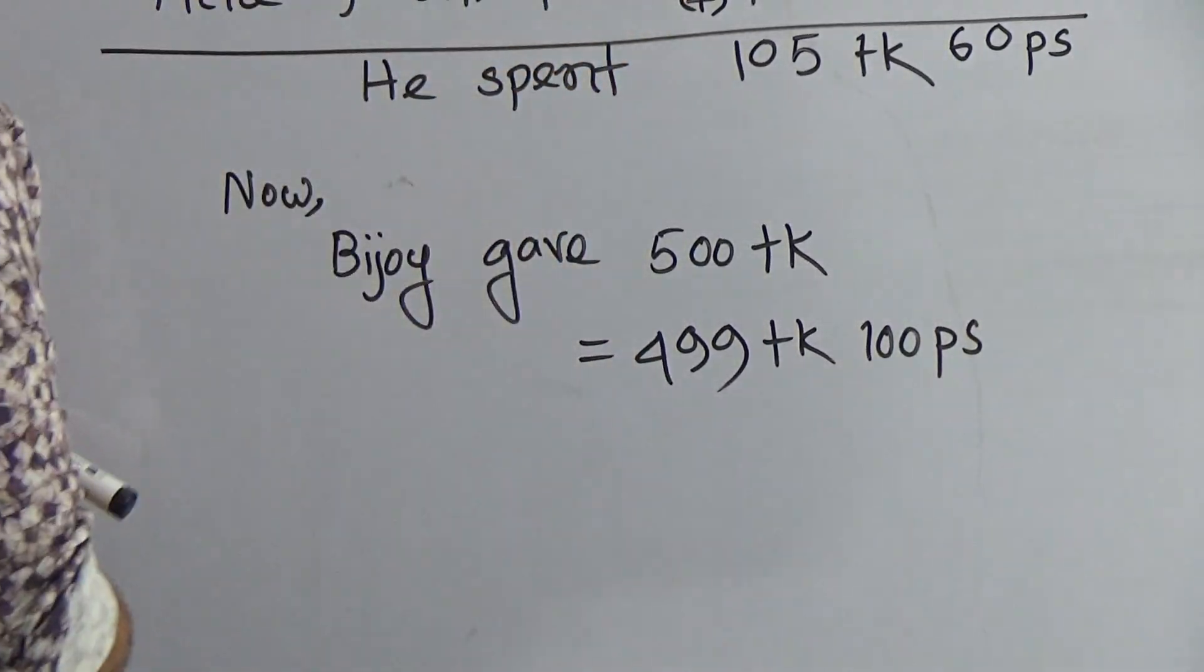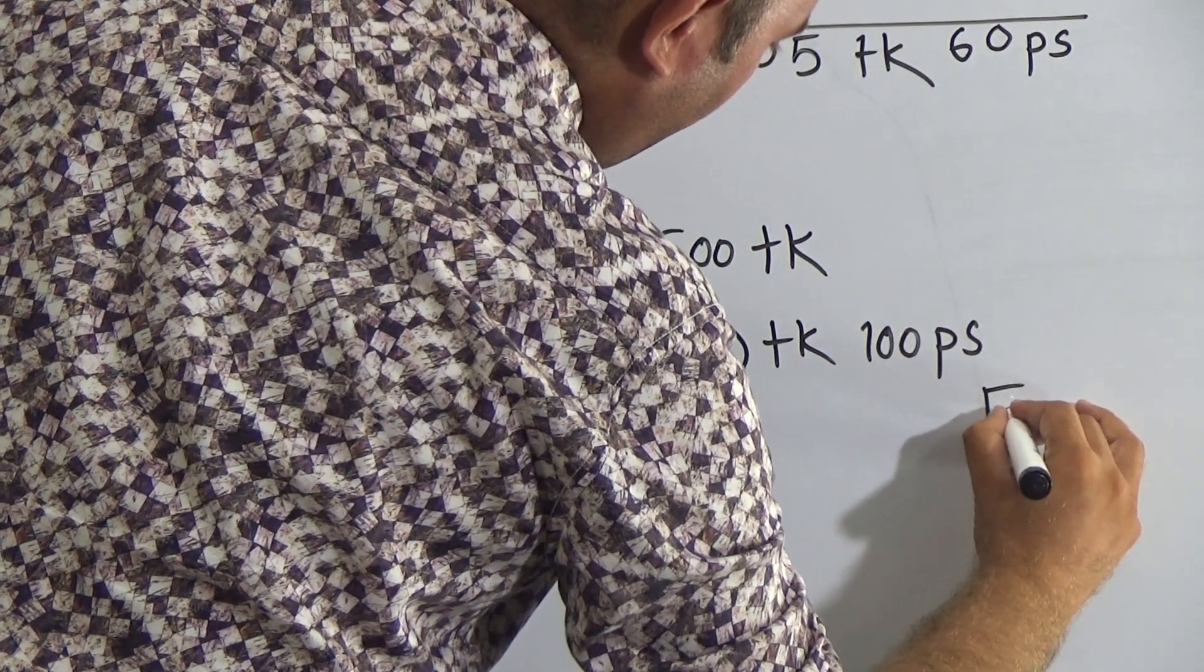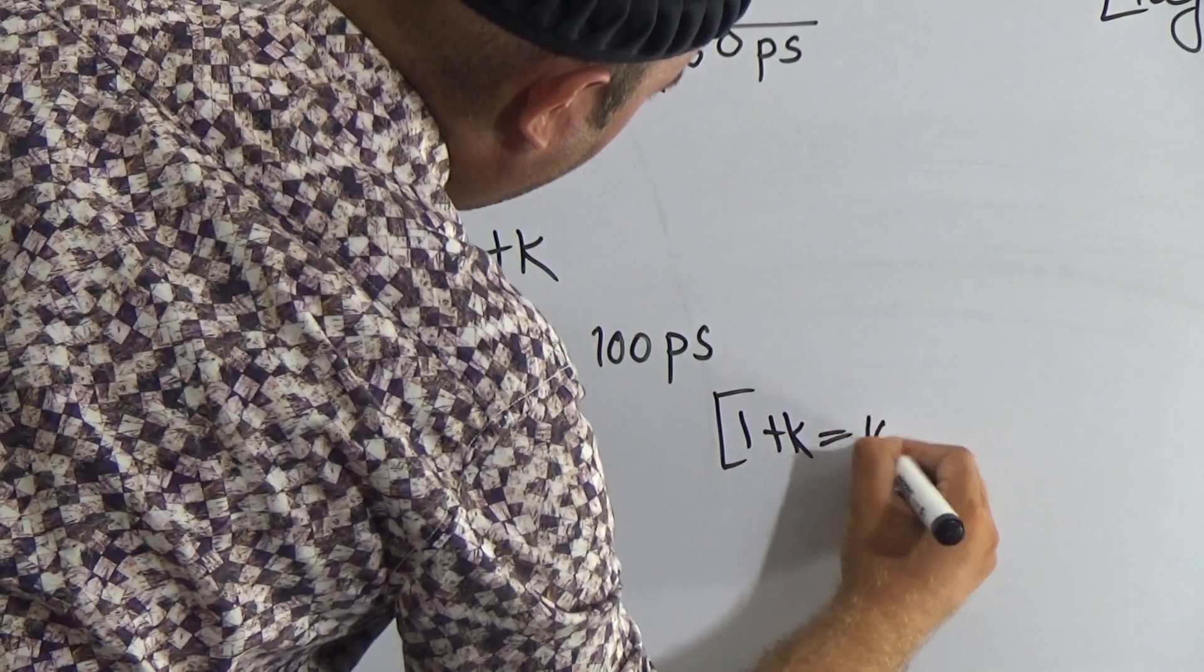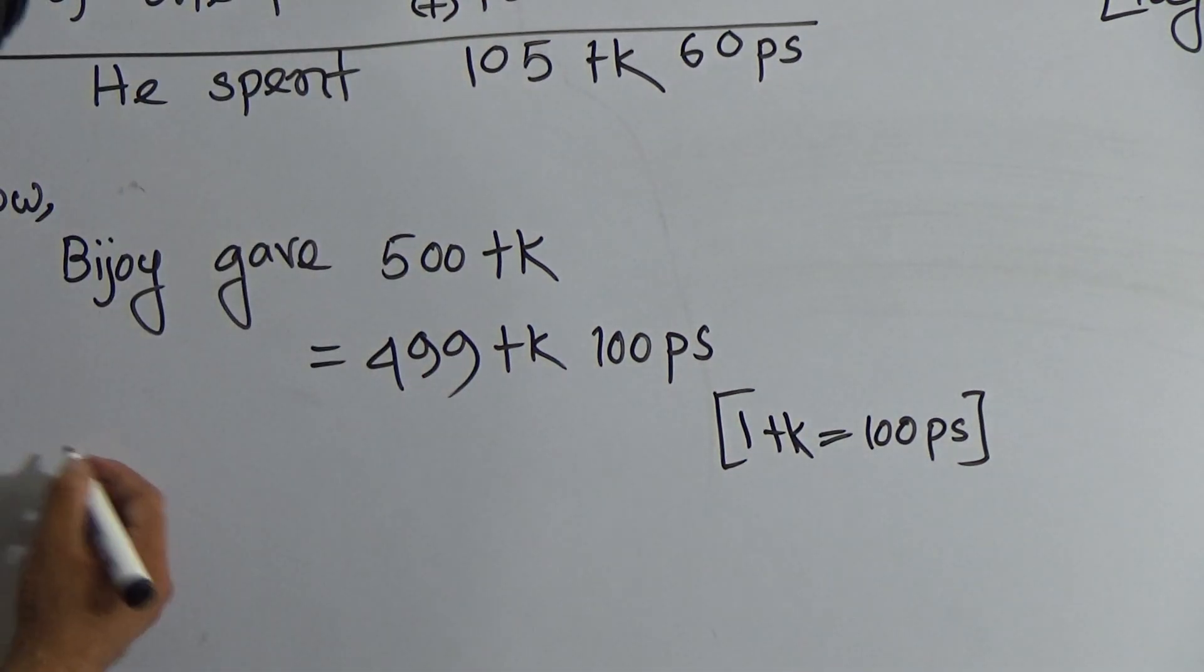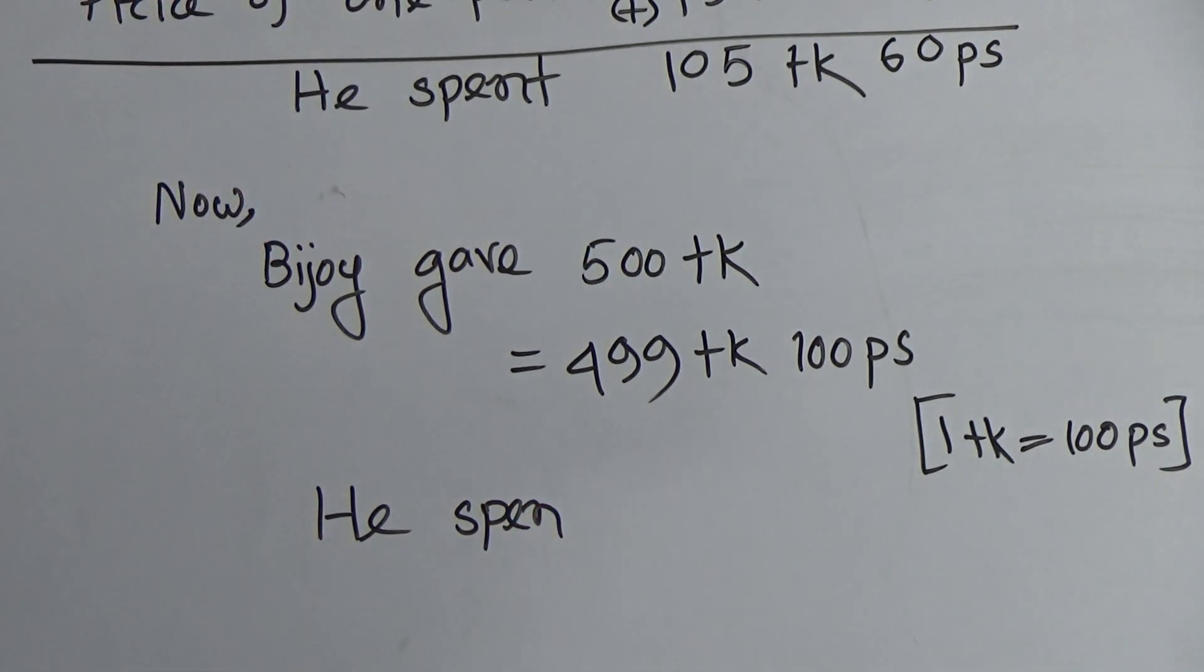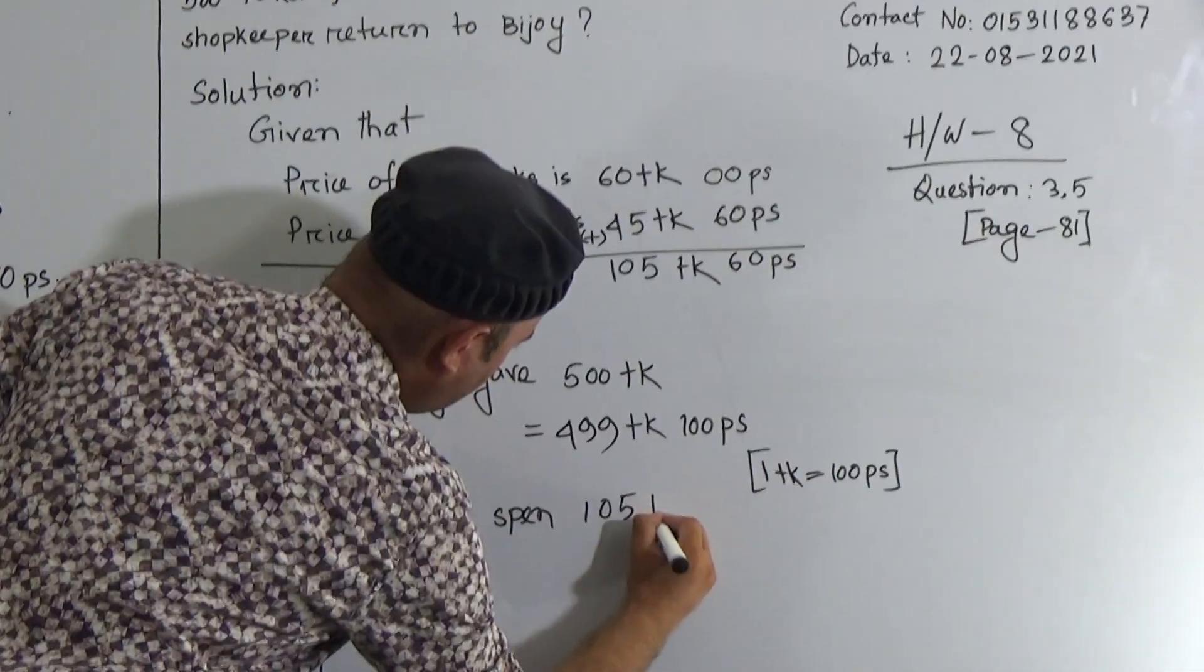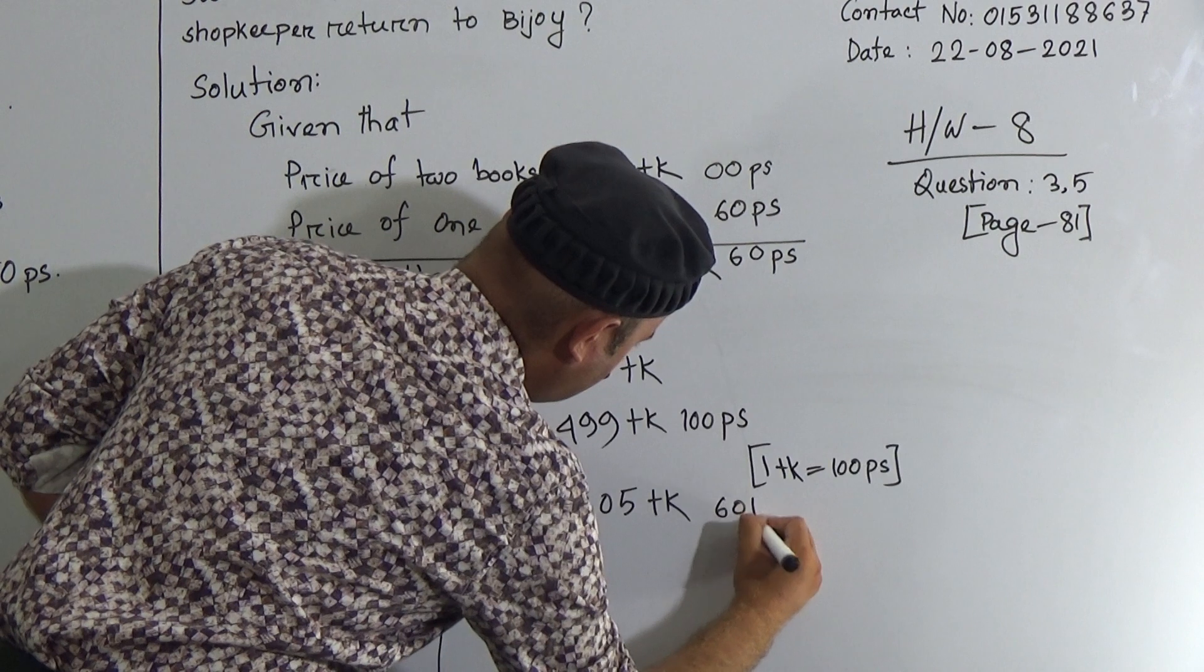For this we can write here 499 taka and 100 poises, because we know that 1 taka equals 100 poises. He spent 105 taka and 60 poises.